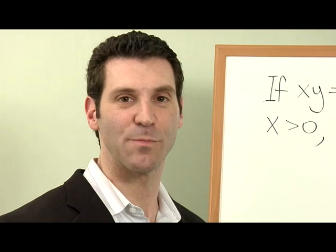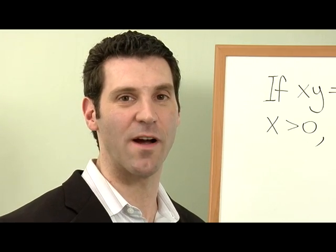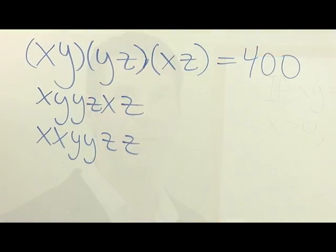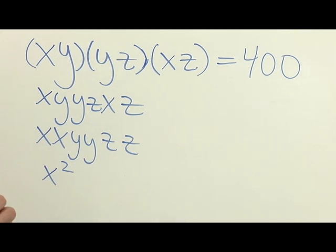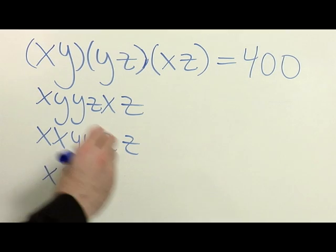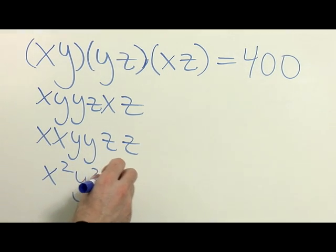Multiplying an expression by itself is the same as squaring the expression. So x times x is x squared, y times y is y squared, and z times z is z squared.